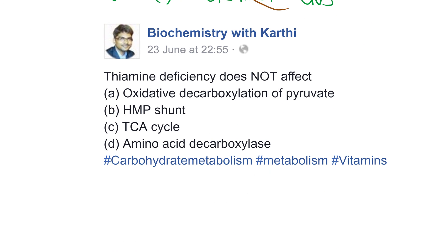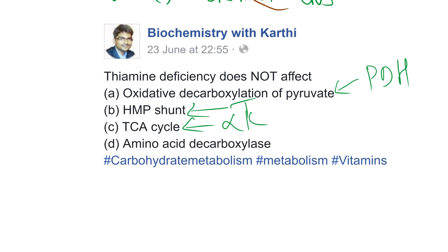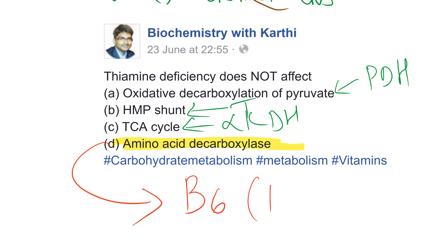Now let us solve the answer. Thiamine deficiency does not affect — you know that oxidative decarboxylation of pyruvate (PDH reaction) requires TPP, transketolase requires TPP, and alpha-ketoglutarate dehydrogenase requires TPP. So what is left is amino acid decarboxylase, which requires vitamin B6, that is pyridoxal phosphate.